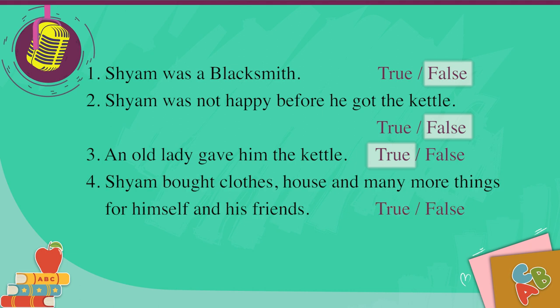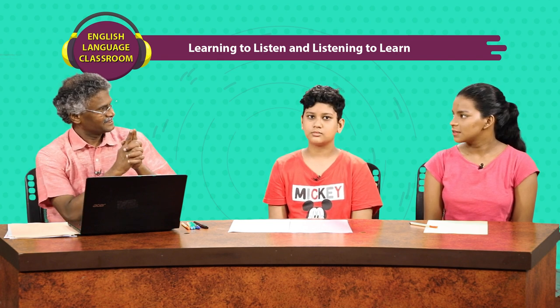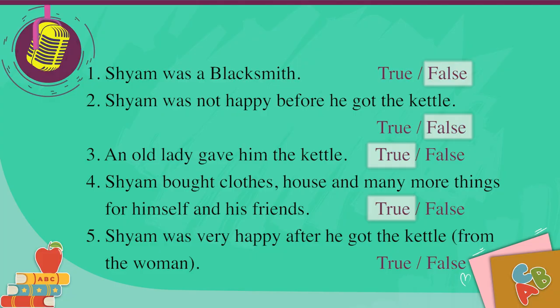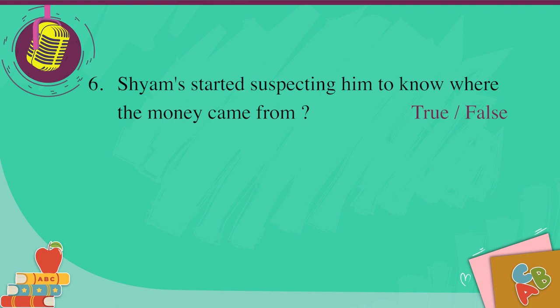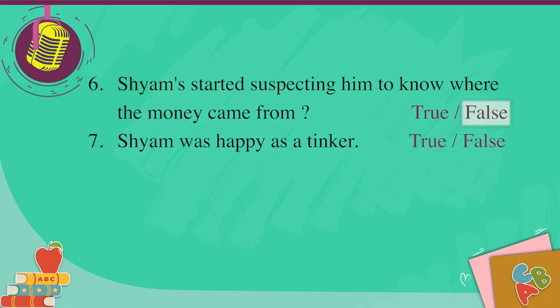Statement four: Shyam bought clothes, house and many more things for himself and his friends — that is true. He got the money by selling the gold coins given by the kettle. Statement five: Shyam was very happy after he got the kettle from the woman — true. Statement six: Shyam's friends started suspecting him to know where the money came from — that is false, because it is not mentioned in the story; Shyam thought to himself. Statement seven: Shyam was happy as a tinker — true.